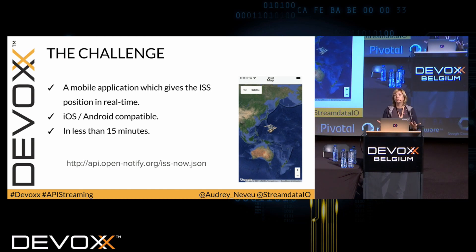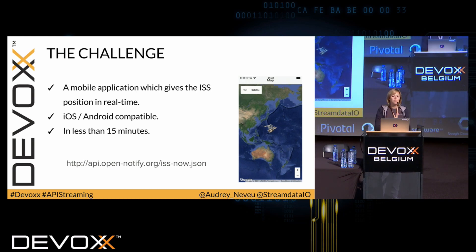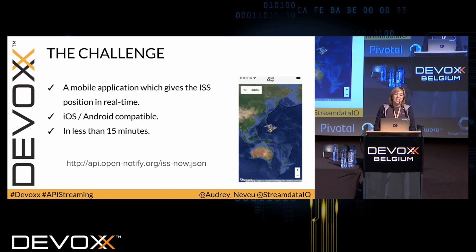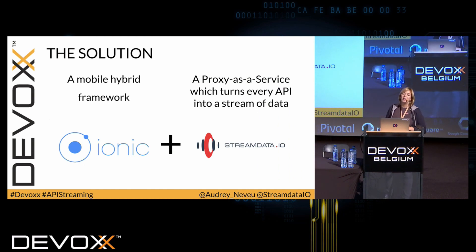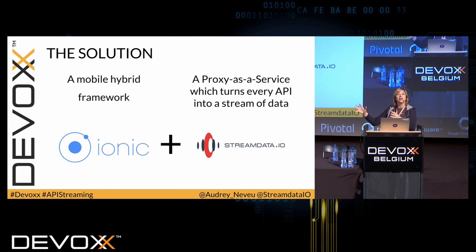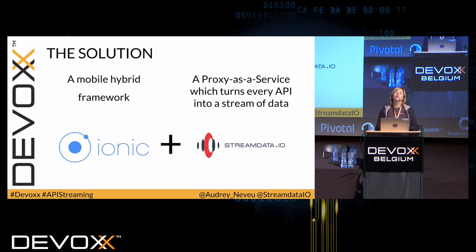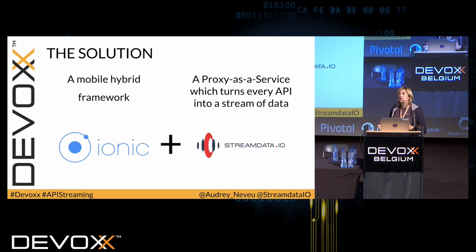To retrieve the position of the ISS, I'm going to use this API, which is open source — you can find the whole code on GitHub, it's pretty cool. To win the bet, I'm going to use Ionic for the mobile hybrid part of the challenge. And for the real-time part, I'm going to use streamdata.io, which is a proxy available as SaaS mode, which turns every JSON API into a stream of data.